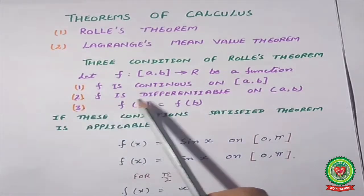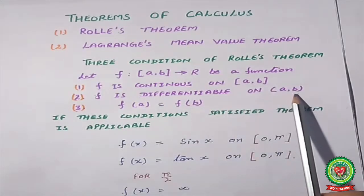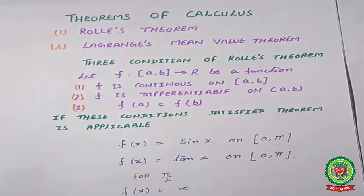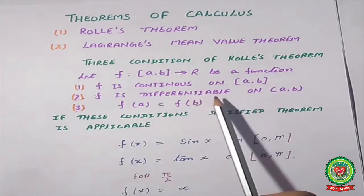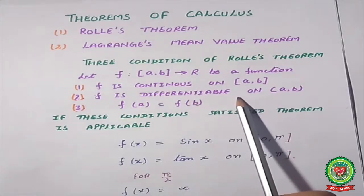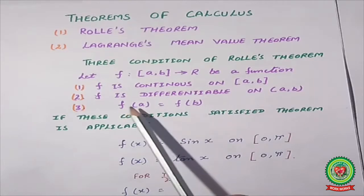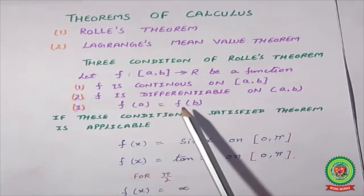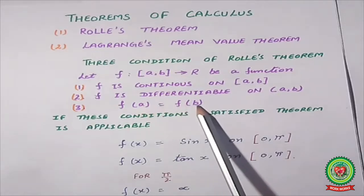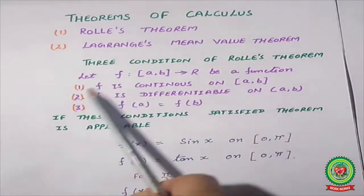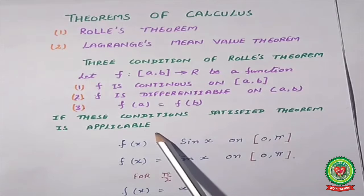The second condition: f is differentiable on the open interval (a, b) — open interval means a and b are not included. In between a and b, that value after differentiation also gives some answer. Third condition: if you put the first endpoint value into the given function and then substitute the second endpoint value, the answers must be equal — that is, f(a) = f(b).